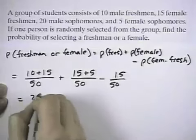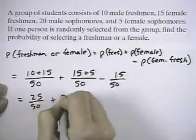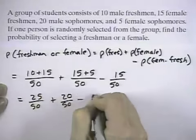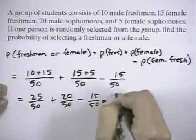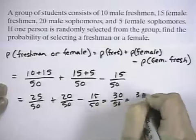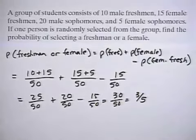So adding these all together, we get 25 out of 50 plus 20 out of 50 minus the 15 out of 50 equals 30 out of 50, or a probability of 3 fifths.